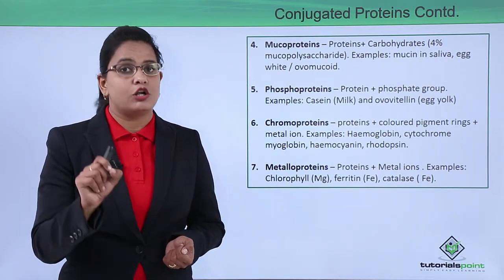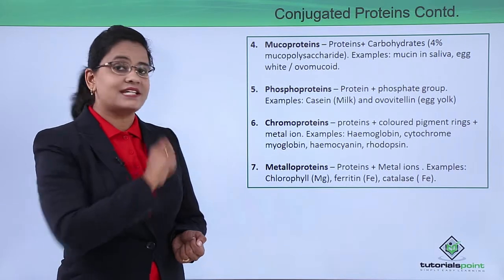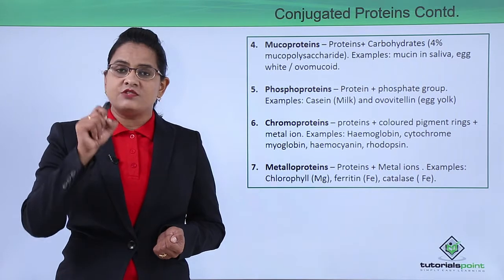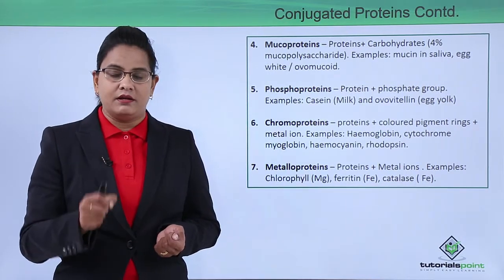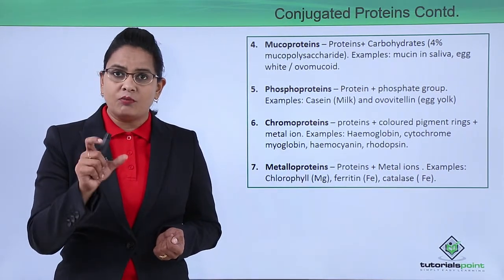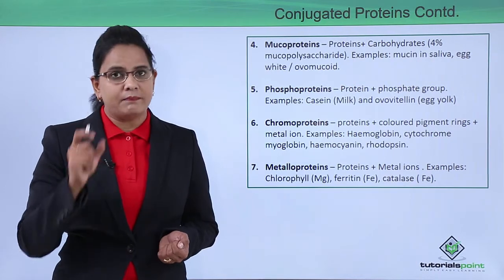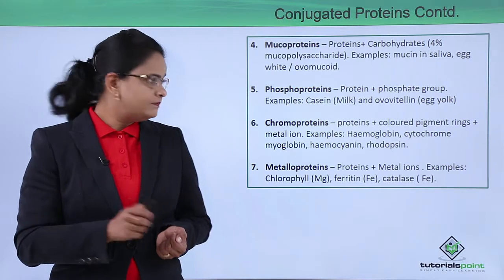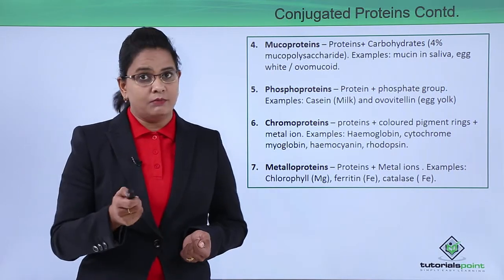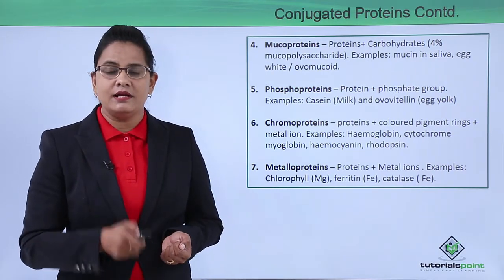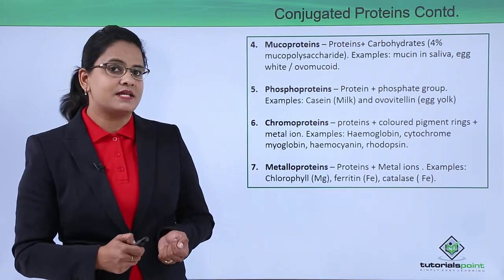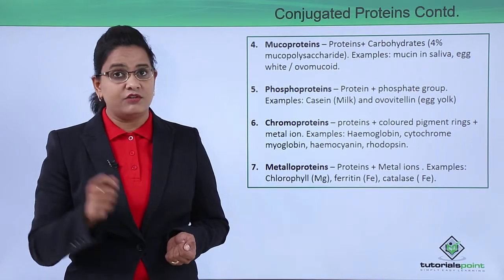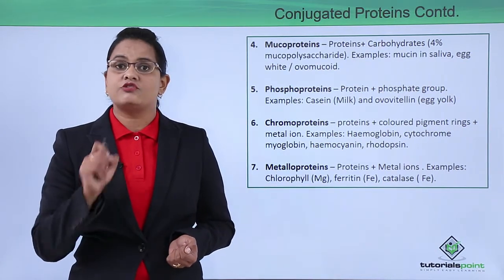The next category is chromoproteins. 'Chromo' means color, so these are proteins responsible for color. They have a chromophore ring along with a metal and a protein. Common examples are hemoglobin, which gives red color to blood; cytochromes; myoglobin present in muscles; hemocyanin, which is generally present in invertebrates; and rhodopsin, which is responsible for the color of the eye.